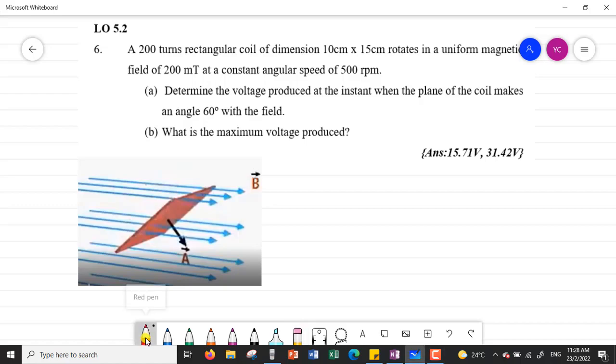Question 6, we have a 200-turn rectangular coil with dimensions of 10 cm by 15 cm rotating in a uniform magnetic field of 200 mT at a constant angular speed of 500 rpm.